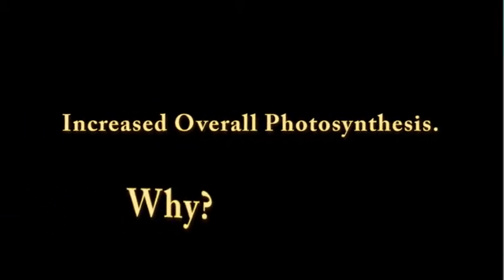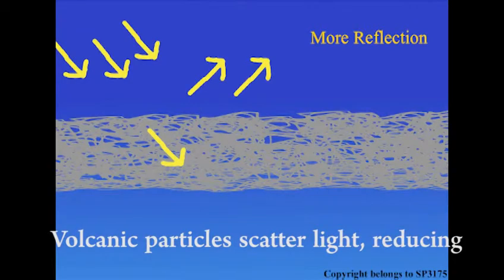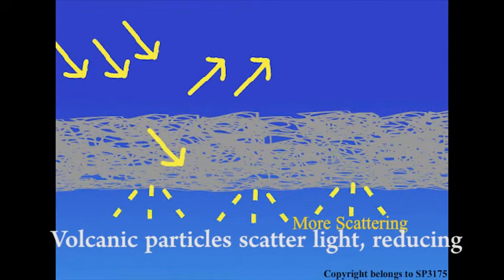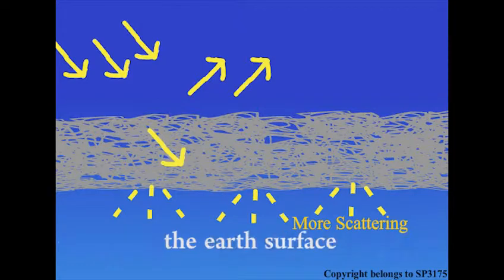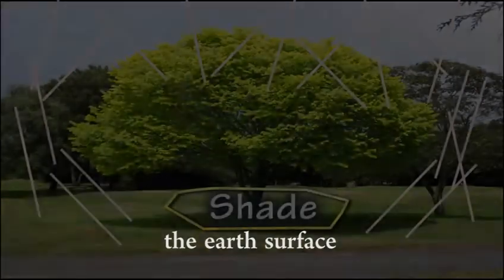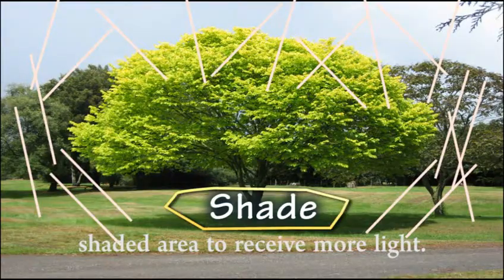This may result in an increase of photosynthesis. Why is this so? Volcanic particles scatter light, reducing the normal amount of light reaching the Earth's surface. As shown earlier, this allows normally shaded areas to receive more light.